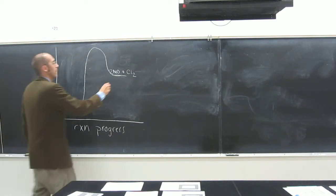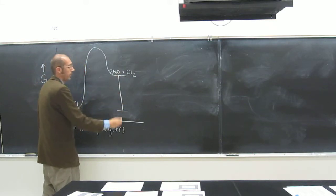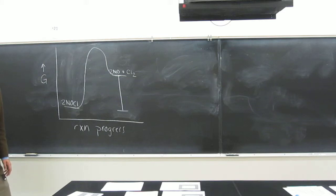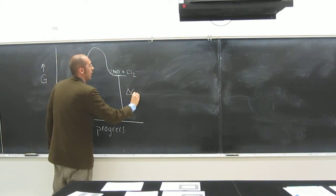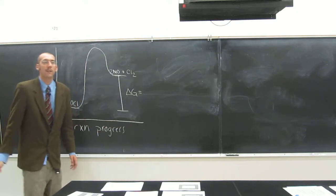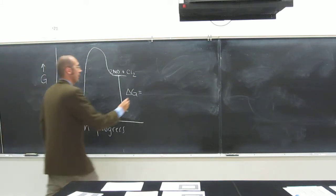So remember what did we say, the difference between the reactants and the products? What do we call that? That's delta G, or the change in total energy, change in total free energy. And is that going to be positive or negative? Positive, right? Why?